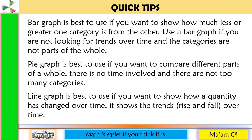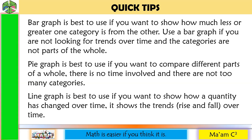Quick tips: Use a bar graph if you want to show how much less or greater one category is from another, when you are not looking for trends over time, and the categories are not parts of a whole. Use a pie graph if you want to compare different parts of a whole, there is no time involved, and there are not too many categories. Use a line graph if you want to show how a quantity has changed over time and to show trends — rise and fall over time.